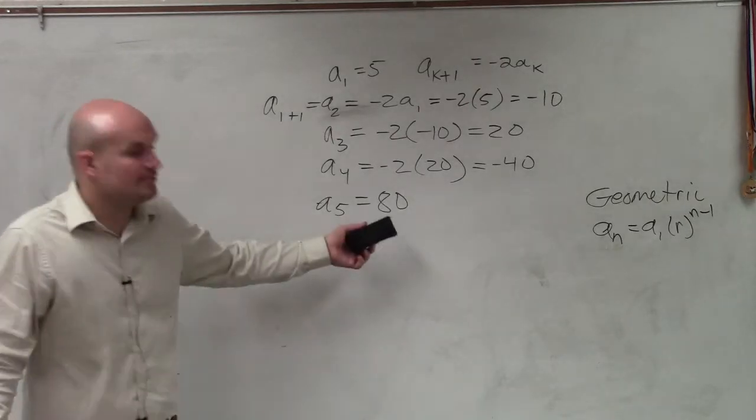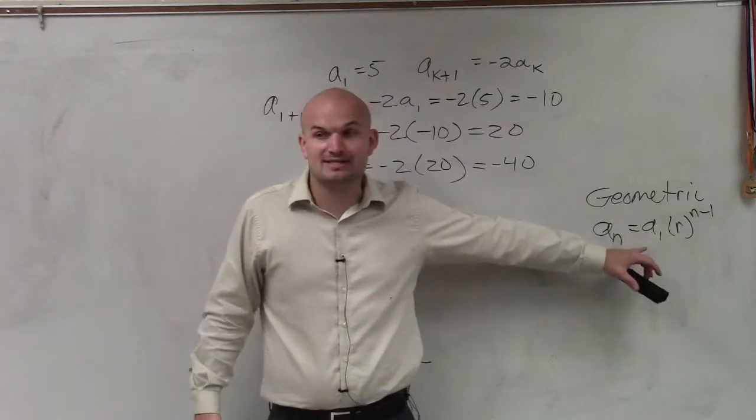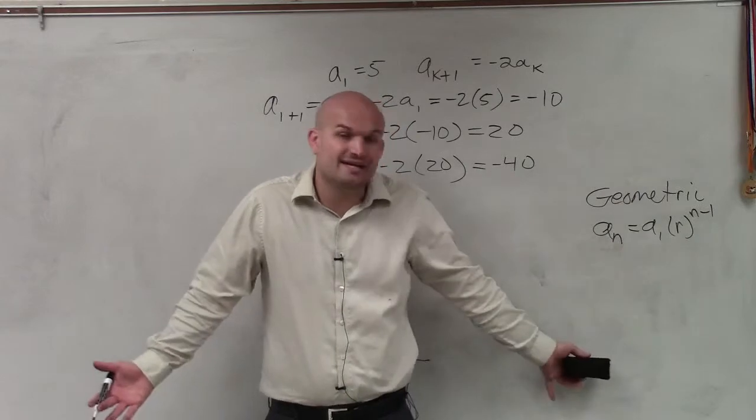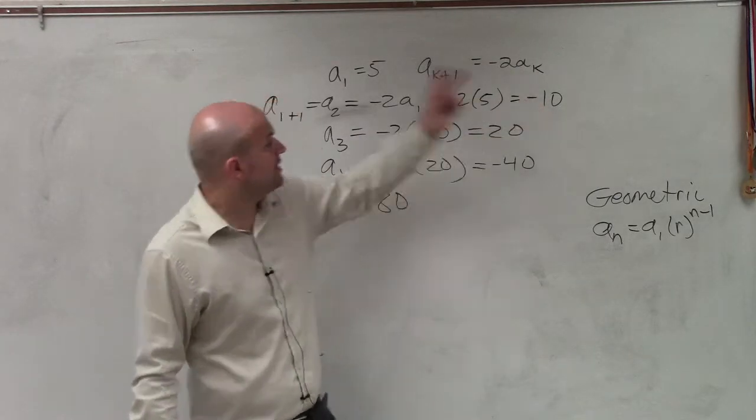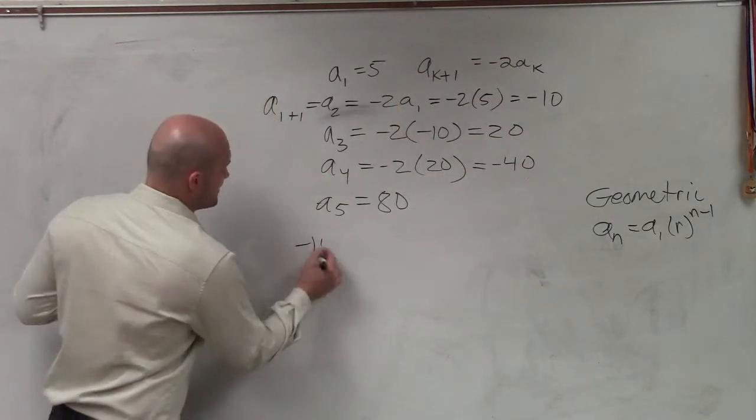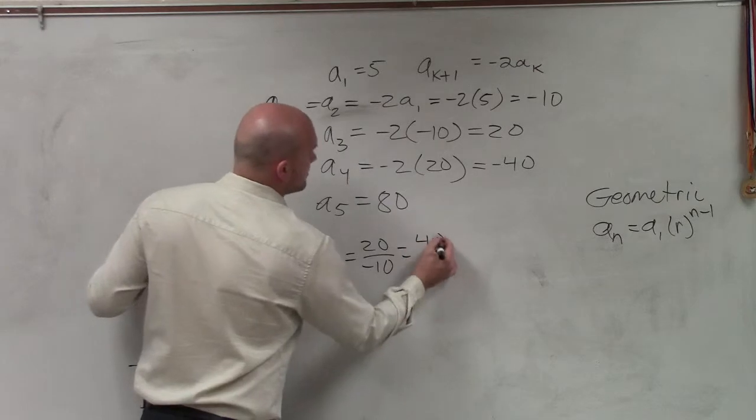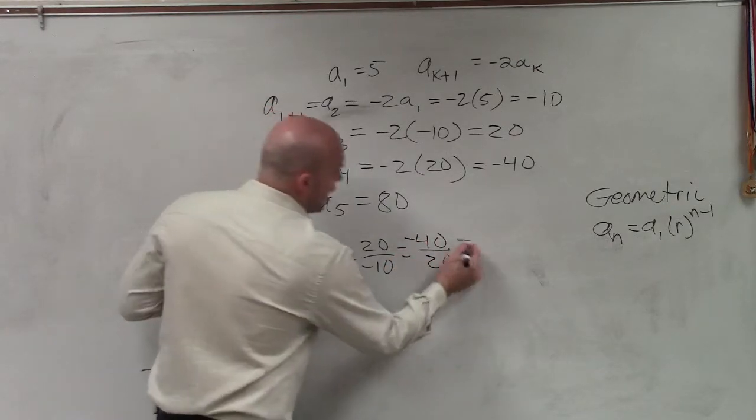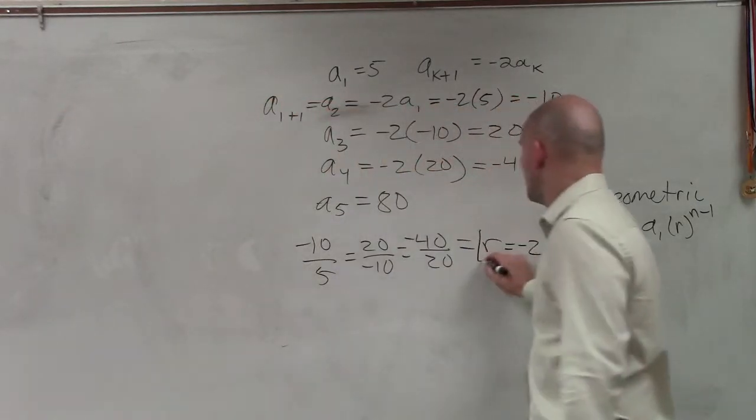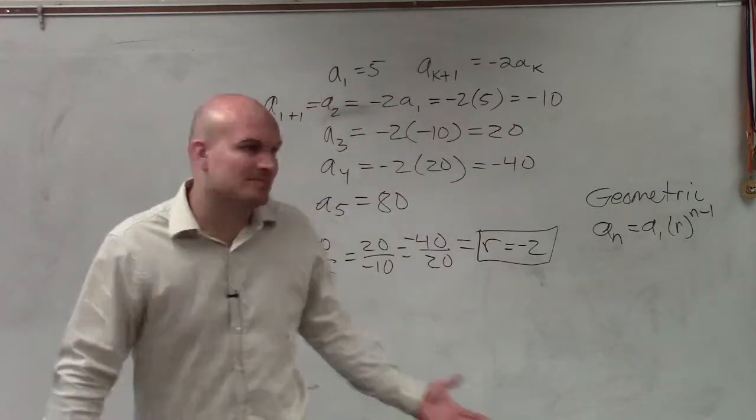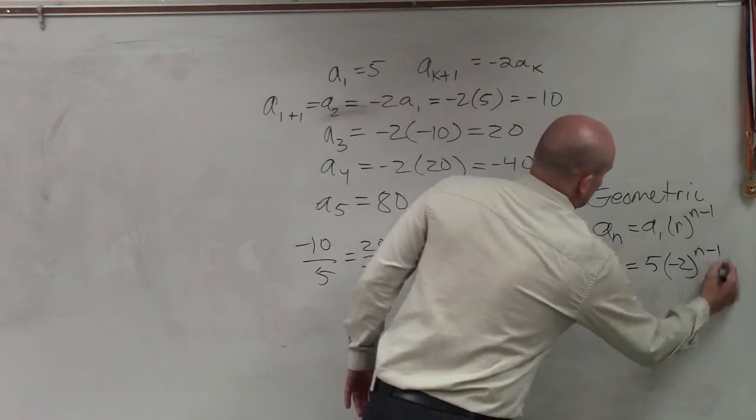So now we look at these values and we need to be able to determine, okay, what is going to be the rule? Well, to define the rule, we need to know what a sub 1 is and we need to know what r is, where n represents any number in the sequence. So remember, r represents our rate. So we need to make sure we can determine, is the ratio between our terms going to be exactly the same? So is negative 10 over 5 equal to 20 over negative 10? And is that equal to 40 or negative 40 over 20? And if they are equal, they equal our value r, which in this case is equal to negative 2, right? Then a sub 1 was provided in the problem. So to get an m for this problem, you need to have 5 times negative 2 n minus 1.